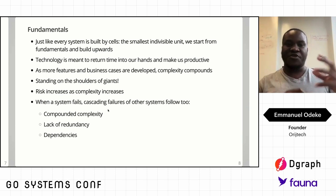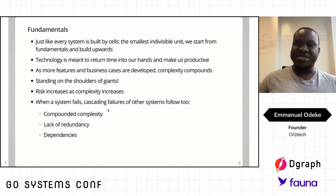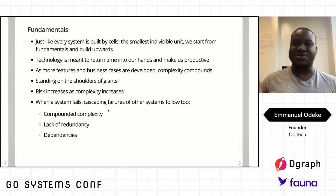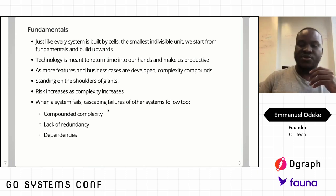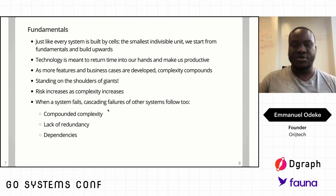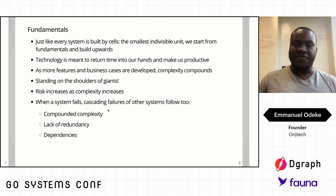The more complex your program gets, the higher the risk of failure. When one system fails, it could take down way more others. How many times do you see failures in cloud services — like when AWS goes down? Half of the internet goes down, and it could just be one region. There are lots of dependencies, lack of redundancy, and obviously complexity.